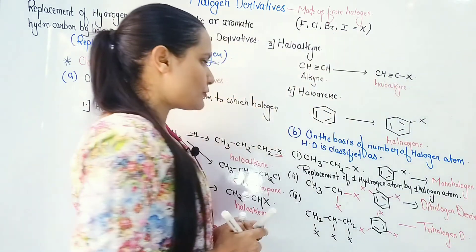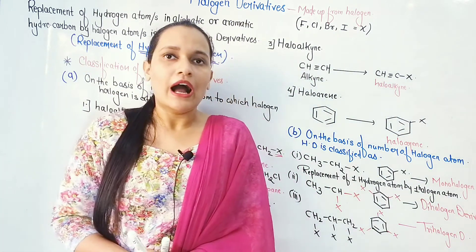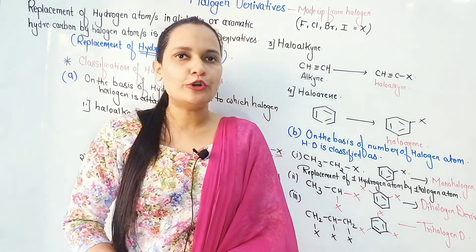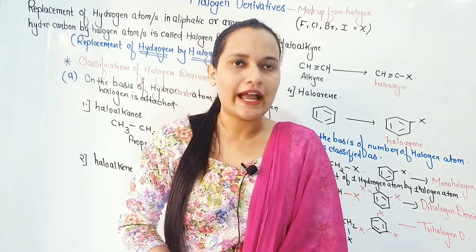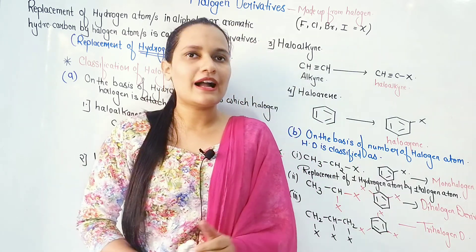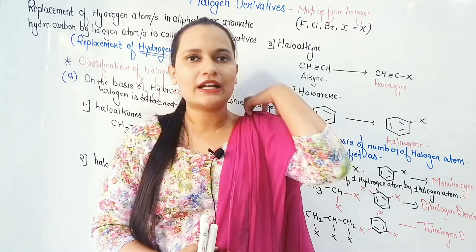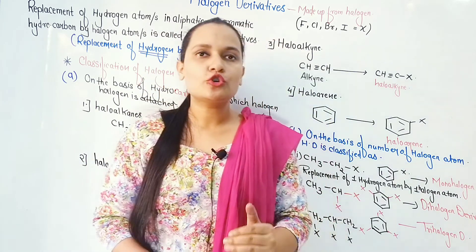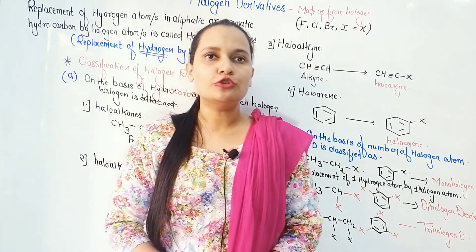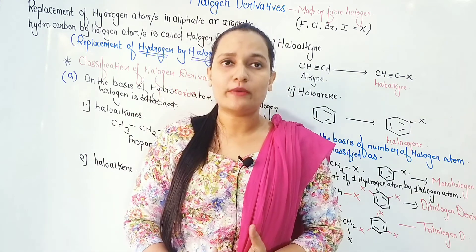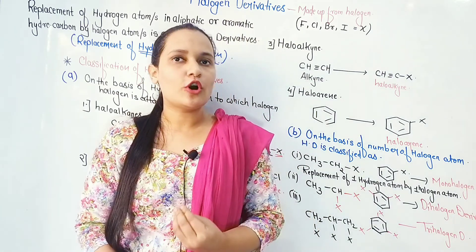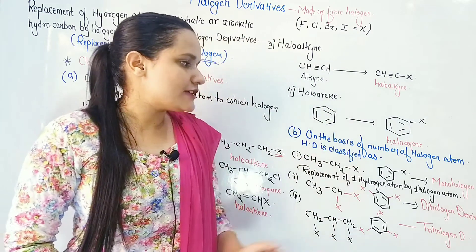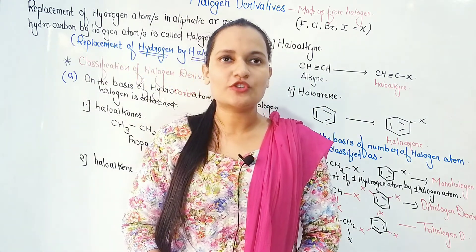So to summarize: if halogen is placed on an alkane, it is a haloalkane; alkene gives haloalkene; alkyne gives haloalkyne; and aromatic compounds give haloarenes. If one halogen replaces one hydrogen, it is a monohalogen derivative; two halogens give dihalogen; and three halogens give a trihalogen derivative. The classification of halogen derivatives is now complete.